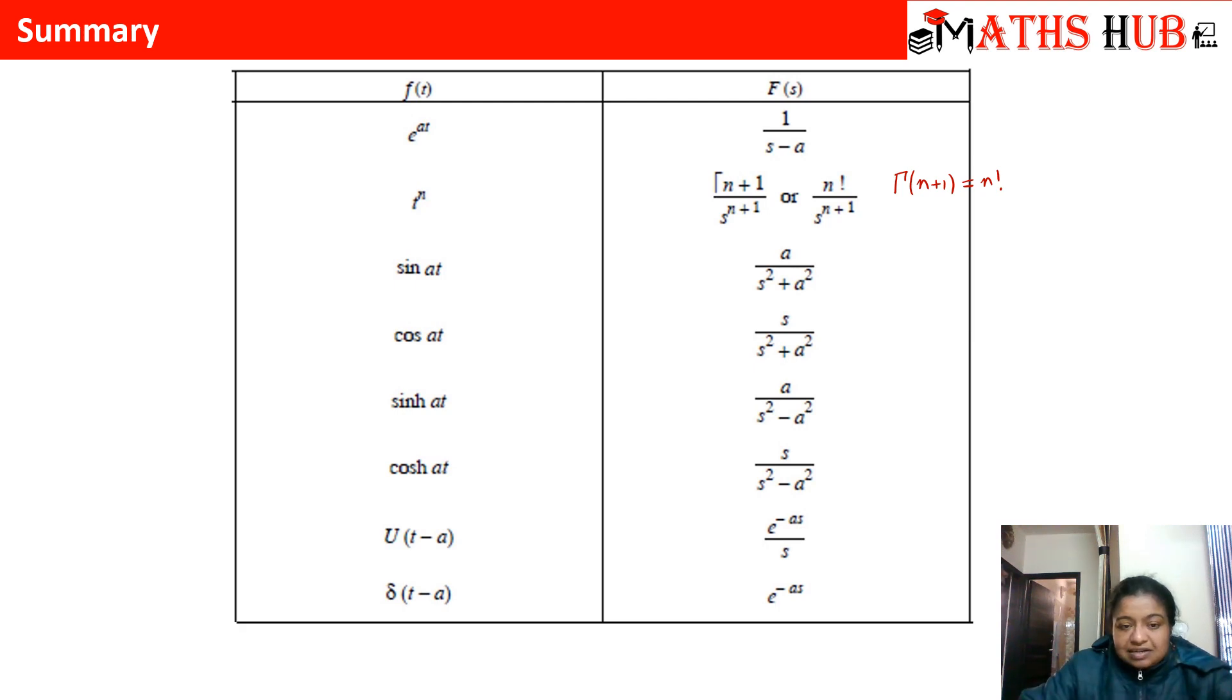Then the next formula says that if we have to calculate Laplace of sine at, then it is a upon s square plus a square. Similarly, Laplace of cos at is s upon s square plus a square. So the difference in cos and sine is for cos it is s upon s square plus a square, for sine at it is a upon s square plus a square.